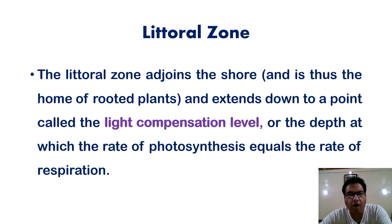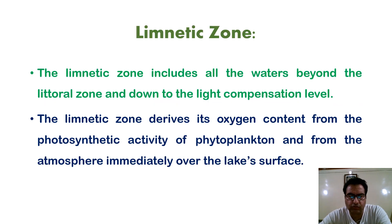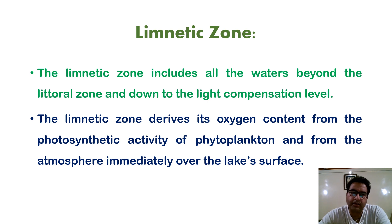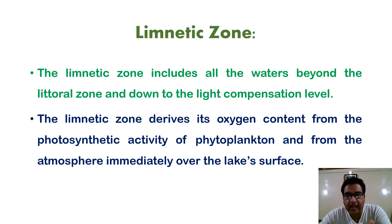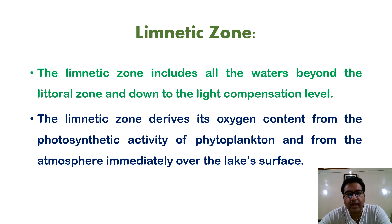When we talk about the periphyton of the littoral zone, it exhibits a zonation paralleling that of rooted plants. Among the periphyton forms — pond snails, damselfly nymphs, climbing dragonfly nymphs, rotifers, flatworms, bryozoa, hydra, and midge larvae — these rest on or are attached to the stems and leaves of plants. All organisms attached to a substrate in the littoral zone are called periphyton, also known as aufwuchs. Moving to the limnetic zone, it includes all water beyond the littoral zone down to the light compensation level. The limnetic zone derives its oxygen from the photosynthetic activity of phytoplankton and from the atmosphere immediately over the lake surface.